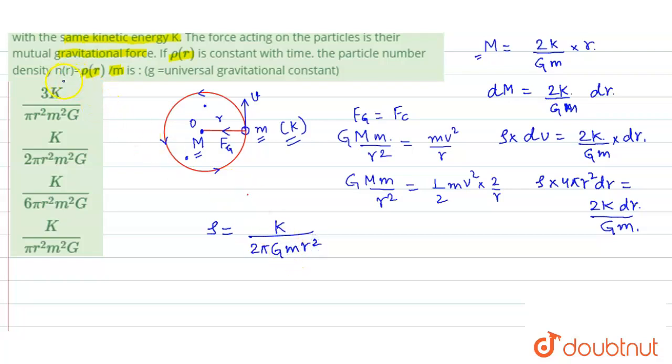Now we have to find the particle number density n(r), which is simply equals to rho divided by m. So you can see here that rho is definitely a function of r. So if we want to find out rho divided by m, this will be k divided by 2 pi G m squared r squared.